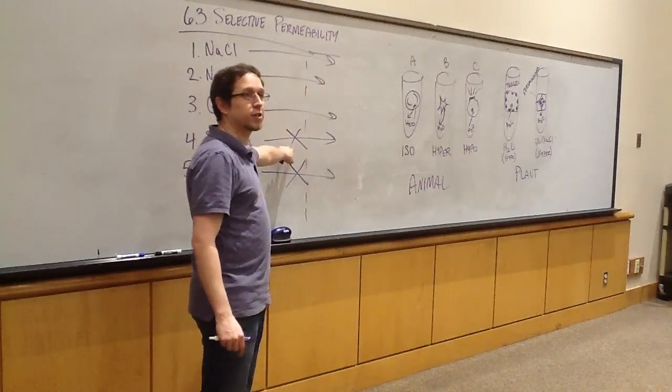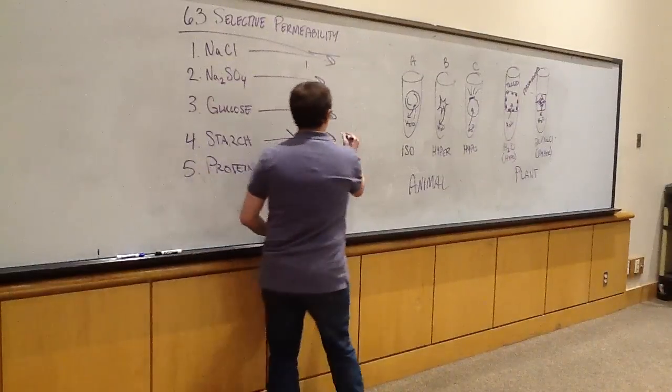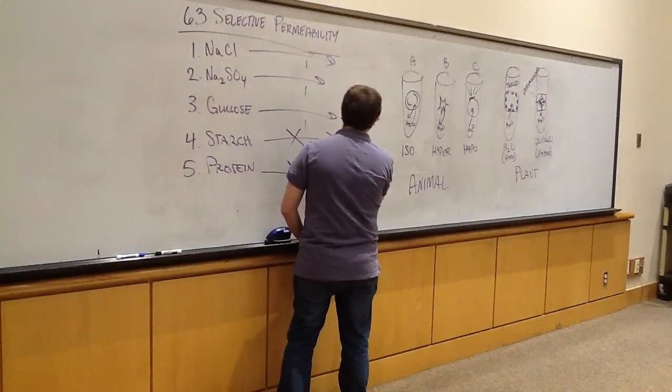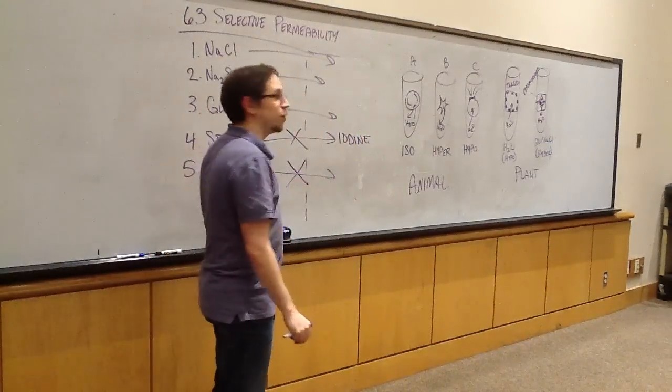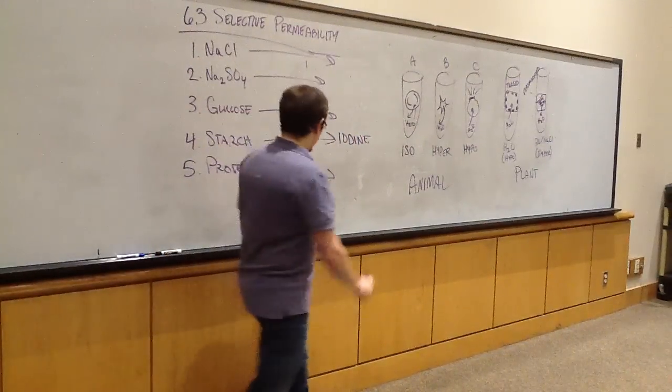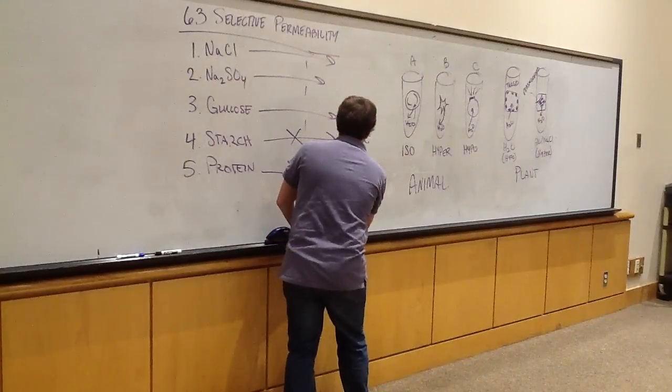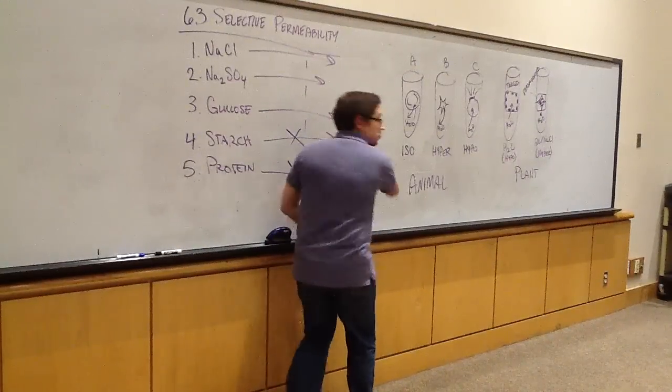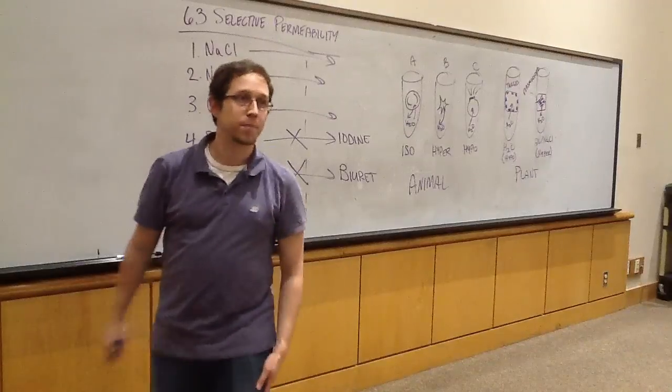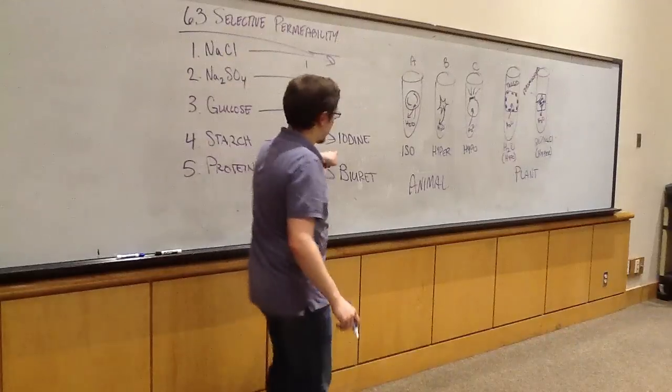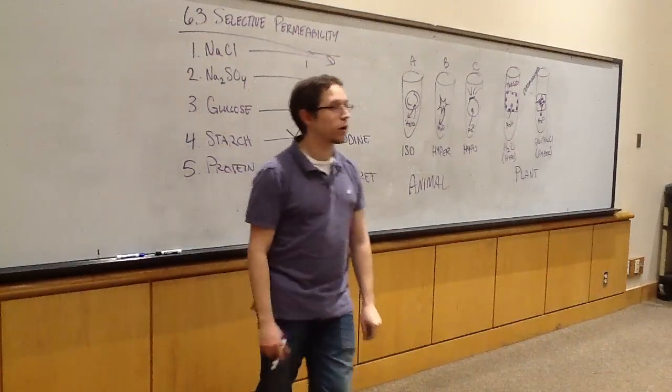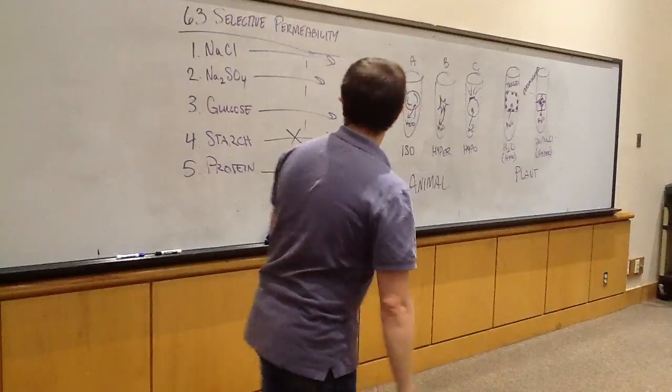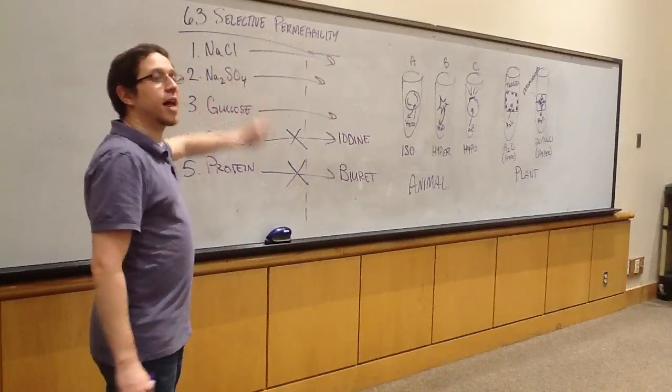Just to make sure these didn't pass through, we still needed to add a detection agent to see if they were there. What did we use to detect starch? Iodine. Hopefully we saw that reddish-brown color, which means no starch. What did we use for protein? Biuret. Hopefully we saw that blue color, meaning no protein passed through. That's the negative result for starch. That leaves these last three.